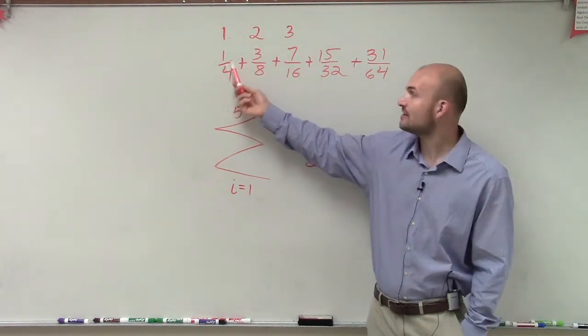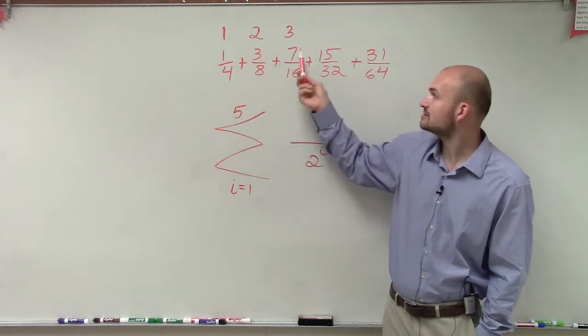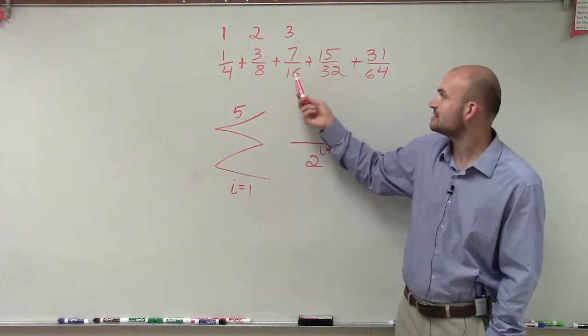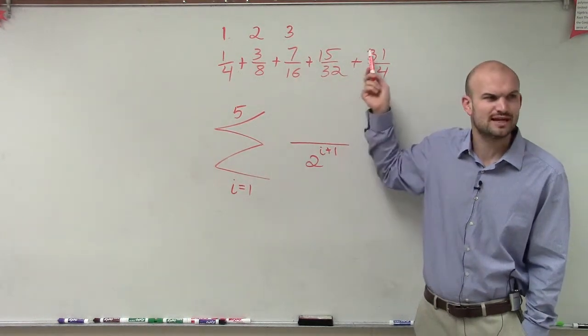But we do know, again, they're very similar. 3 is kind of related to 4. 7 is related to 8. 15 is related to 16. 31 is related to 32. And how are those two related to each other?